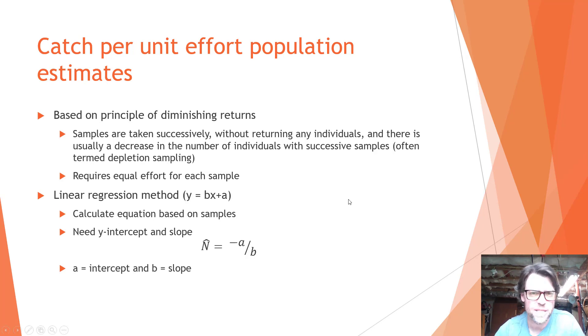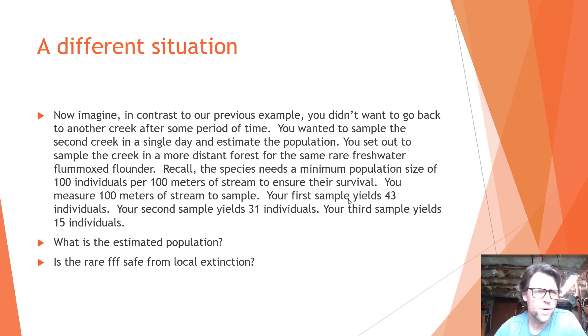Well, let's do another example before we get into the Excel work. So now we're going to imagine, in contrast to our previous example, that we didn't want to go back to another creek after some period of time. So maybe the creek that we're now interested in, we sample the creek in a more distant forest for the same rare freshwater flummoxed flounder. And recall that this species needs a minimum population size of 100 individuals per 100 meters of stream to ensure their survival. So again, we measured out 100 meters of the stream in order to sample it. And our first sample yielded 43 individuals. The second sample yielded 31. And then our third sample we captured 15 individuals. So again, we want to know what is the population estimate? And then also, is the rare freshwater flummoxed flounder safe from local extinction? So let's take a look at our Excel example again.